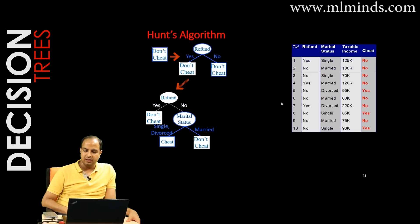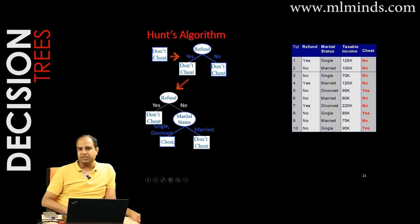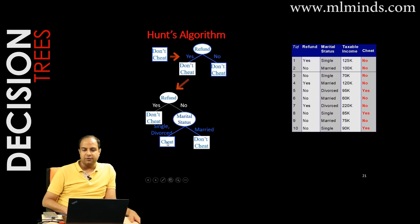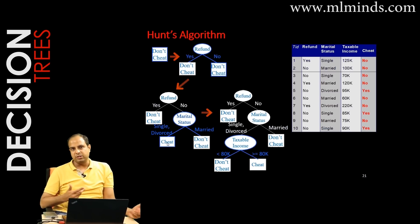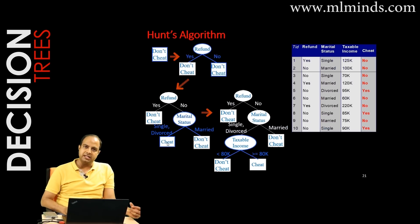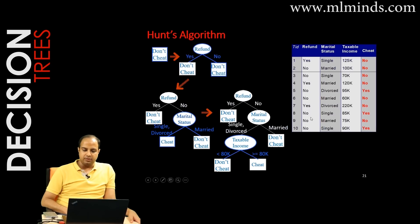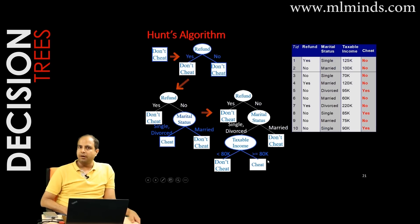Specifically, instances 5, 8, and 10 are yes, and instance 3 is no. The majority is yes, so we label it 'cheat,' but it's still an impure node and must be split further. We split on the taxable income attribute, and fortunately both resulting nodes are pure, so we stop there.